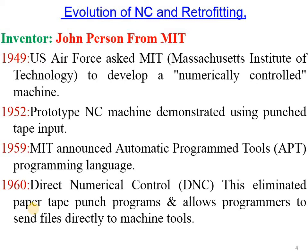Punch tape was an input device used to give signals to the NC machine for what to do in a particular manufacturing operation. It was a platform to provide new input to that machine. In 1959, MIT announced that the Automatic Programmed Tool (APT) programming language was launched. In 1960, Direct Numerical Control eliminated the paper tape punch program; instead, program files or soft files were used directly, sent to the machine tool without using paper tape punch.